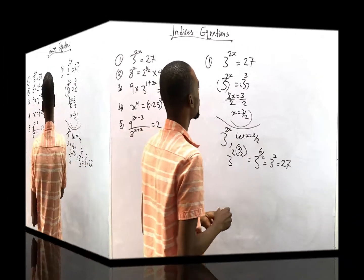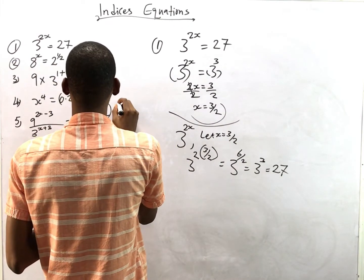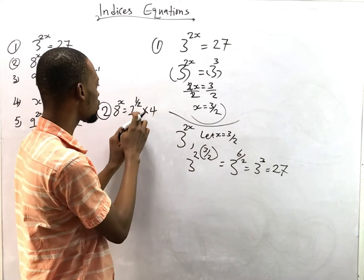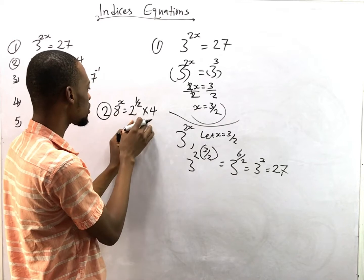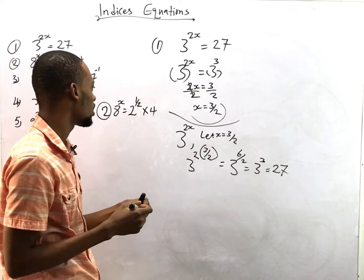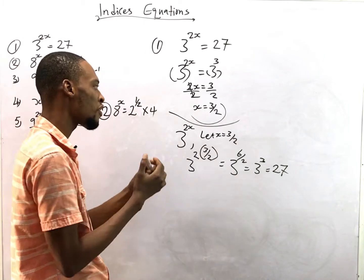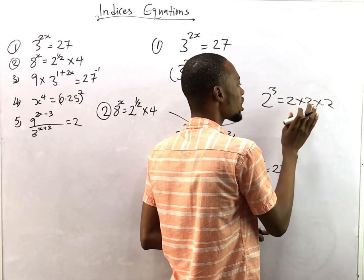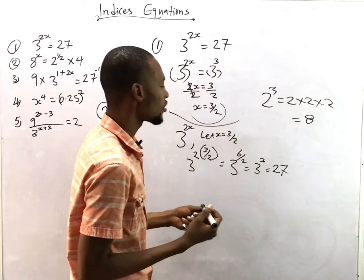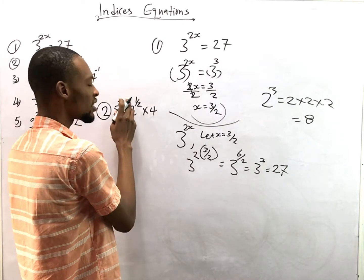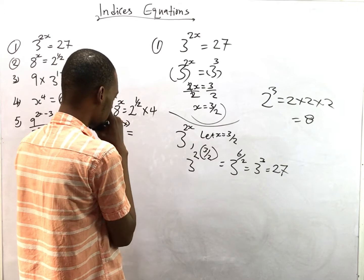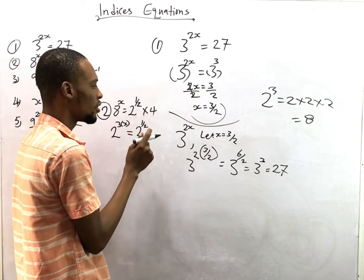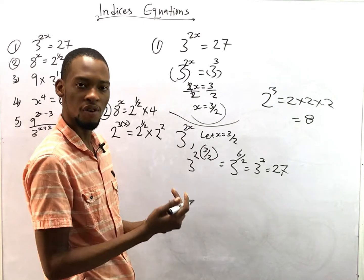The second question says: 8^s = 2^(1/2) × 4. Two seems to be the smallest base, so we express everything in terms of 2. We recall that 8 = 2^3, since 2 × 2 × 2 = 8. So the left side becomes 2^(3s). For the right side, 4 = 2^2.